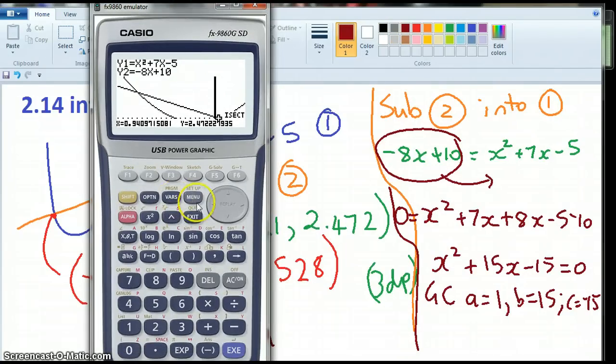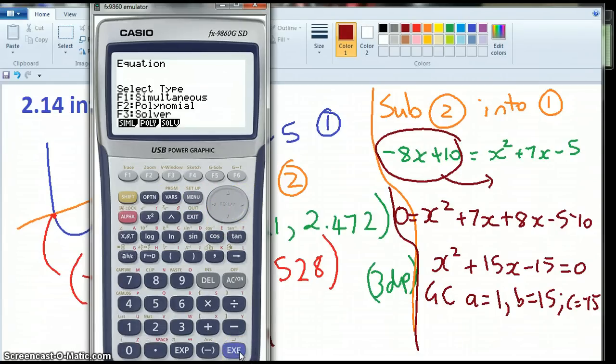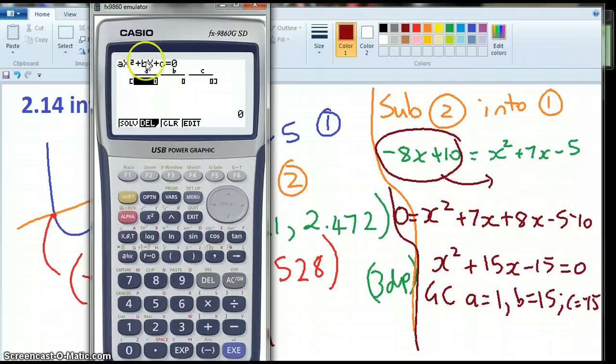Menu, and I'm going into equations, which is just there. Execute, and I've got a polynomial, and I've got degree 2. So it's ax squared plus bx plus c. Check, something x squared plus something x plus something.